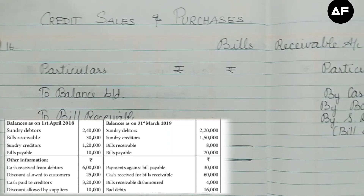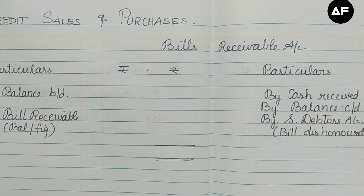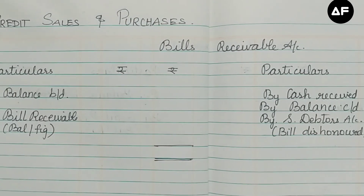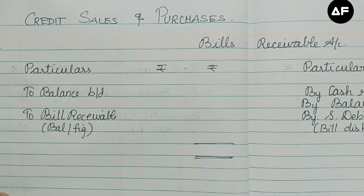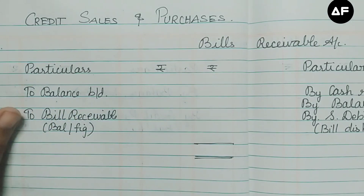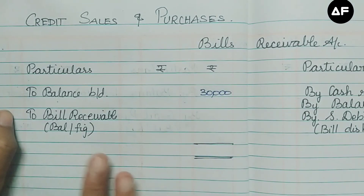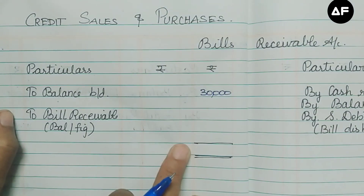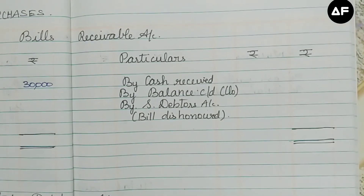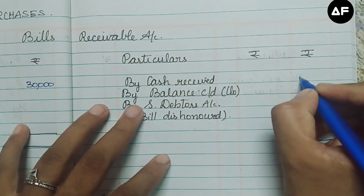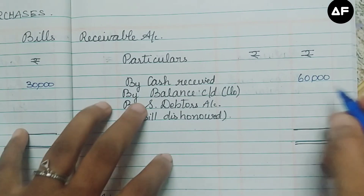Now I've written out the bills receivable account with the debit side and credit side. On the debit side, the opening balance of the bills receivable account is 30,000. We do not have anything else on the debit side — only the balancing figure. On the credit side, we have cash received from bills receivable: rupees 60,000, and the closing balance of bills receivable: rupees 8,000.